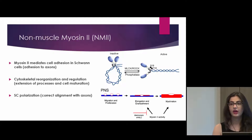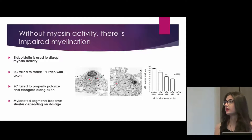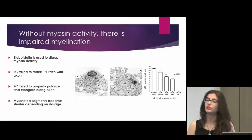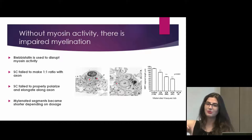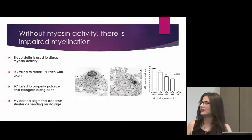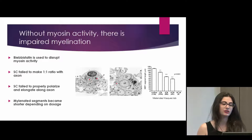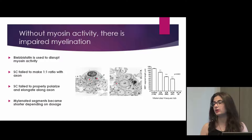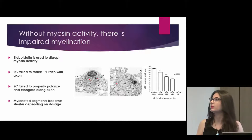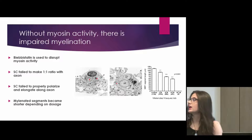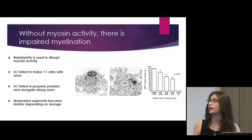When myosin-2 is non-specifically inhibited using blebbistatin, we find that the Schwann cell fails to make a one-to-one ratio with the axon. As you can see here, this is a Schwann cell treated with blebbistatin — the little stars represent axons and the Schwann cells just kind of plopped on top, not really making much contact with one axon. It also failed to properly polarize and elongate along an axon, and the myelinated segments became shorter depending on the increased dosage. This is a proper myelinating Schwann cell — you can see that the axon is right in the middle of the Schwann cell, properly encircled around it, and you can see the difference between the blebbistatin-treated and the normal wild-type Schwann cell.